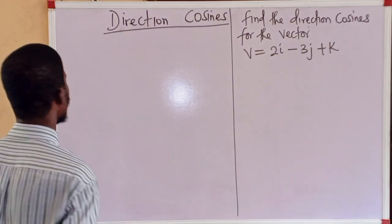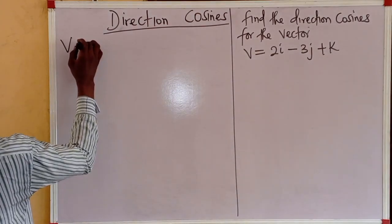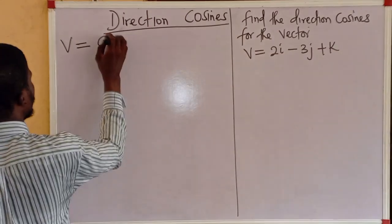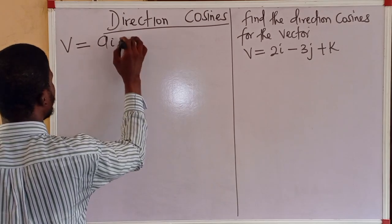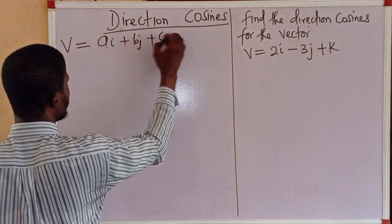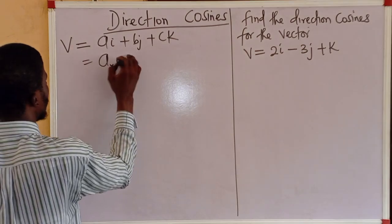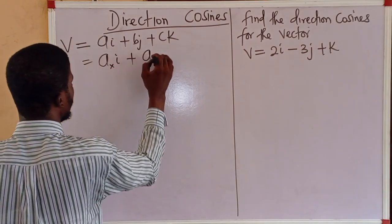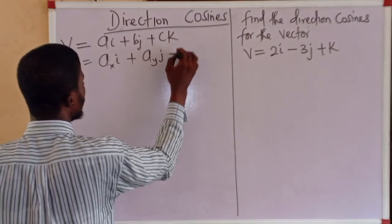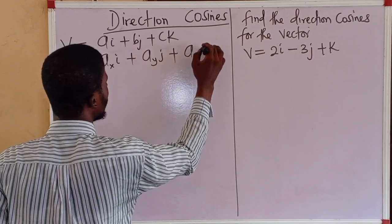Let's consider a vector v equal to a i plus b j plus c k which we can write as ax i plus ay j plus az k.